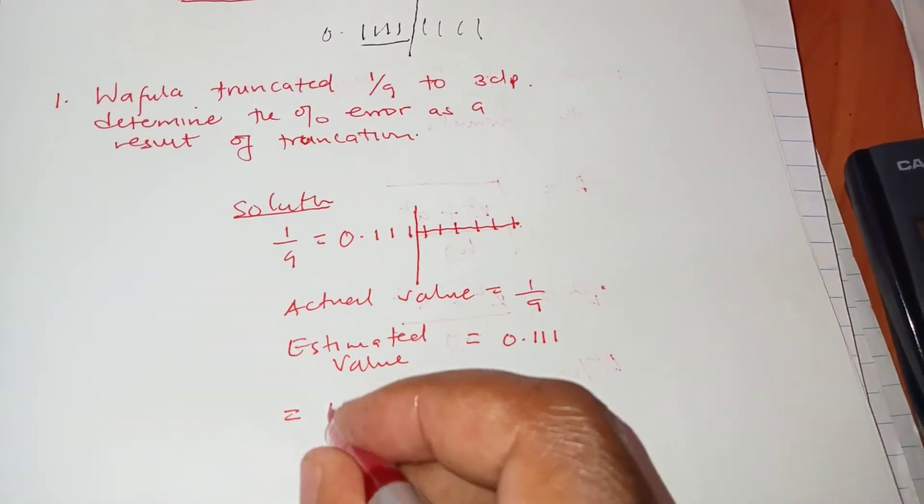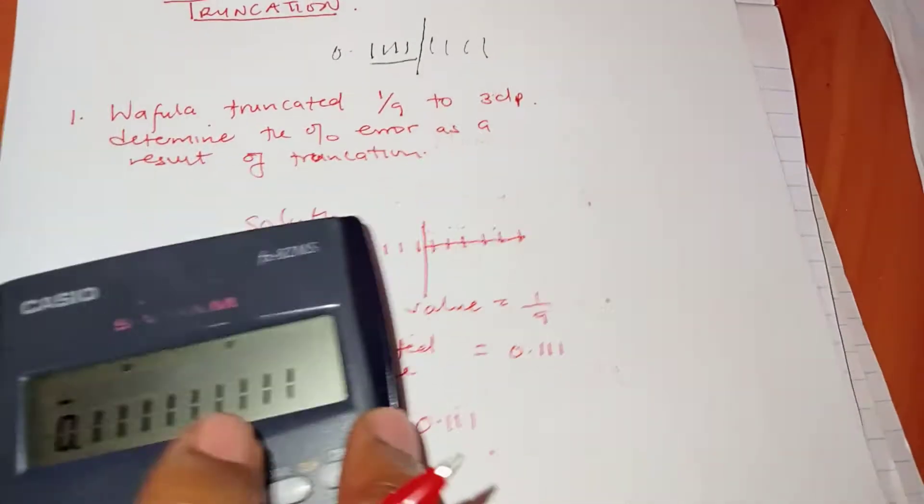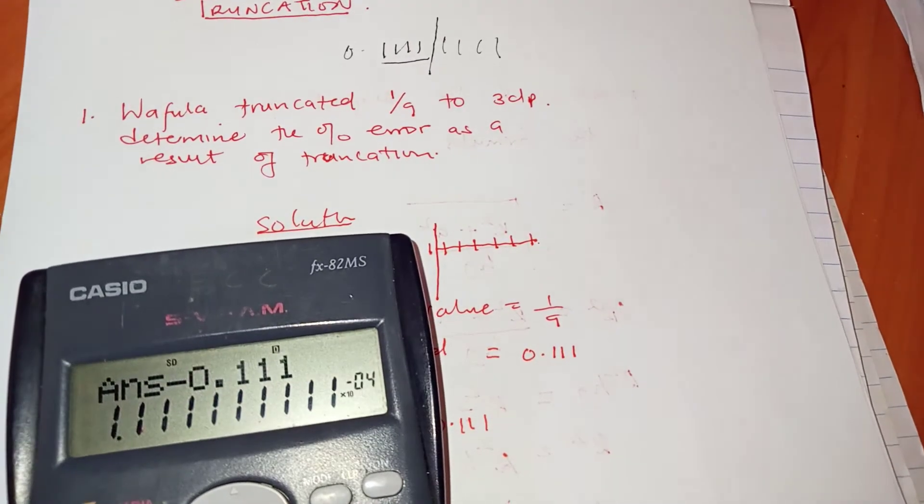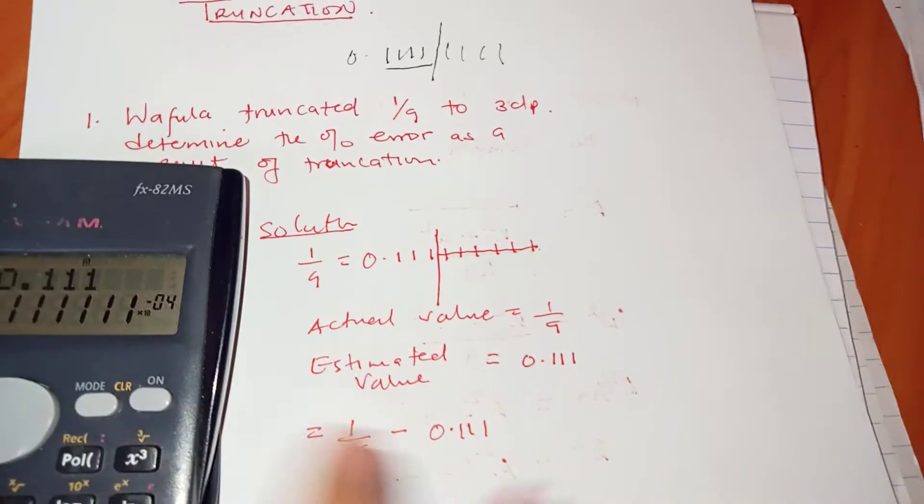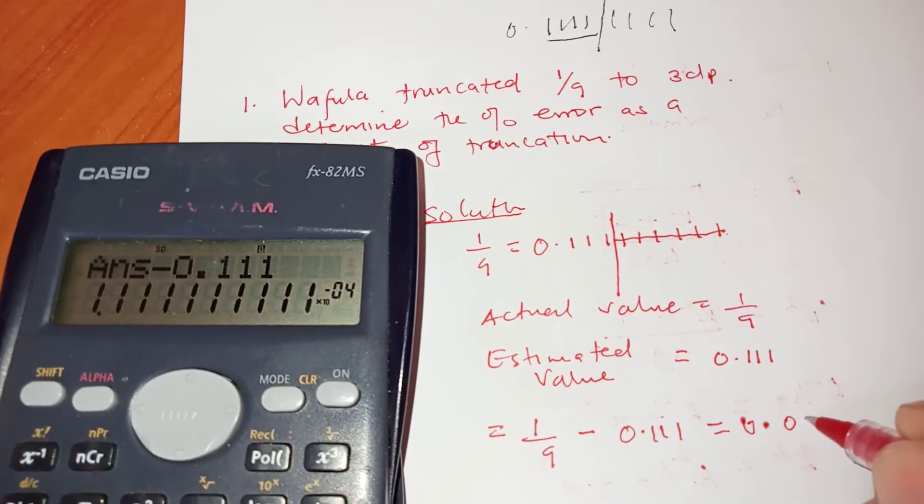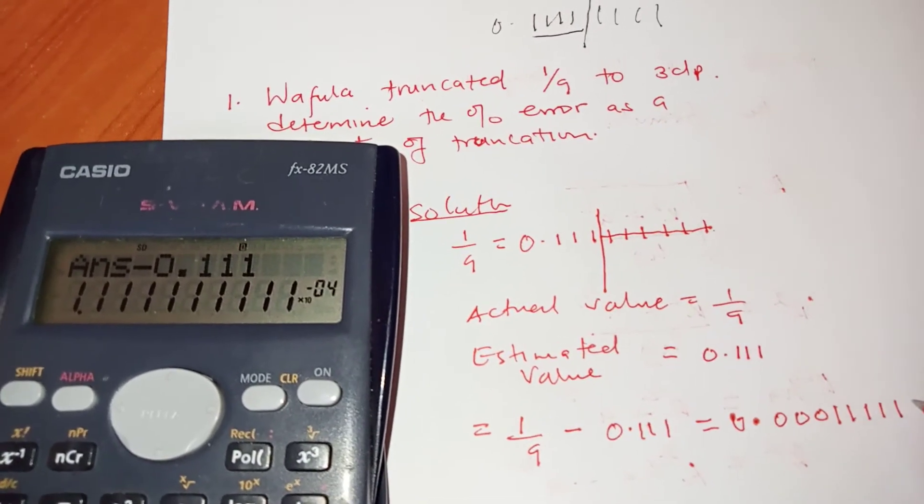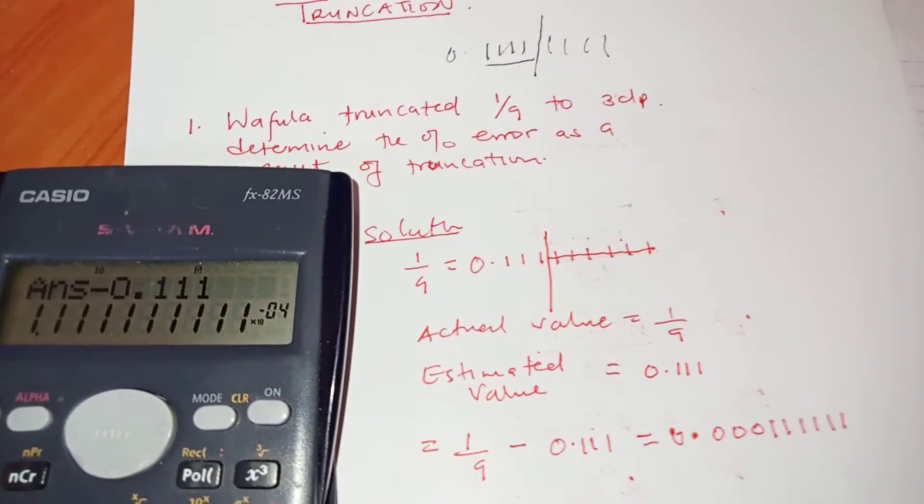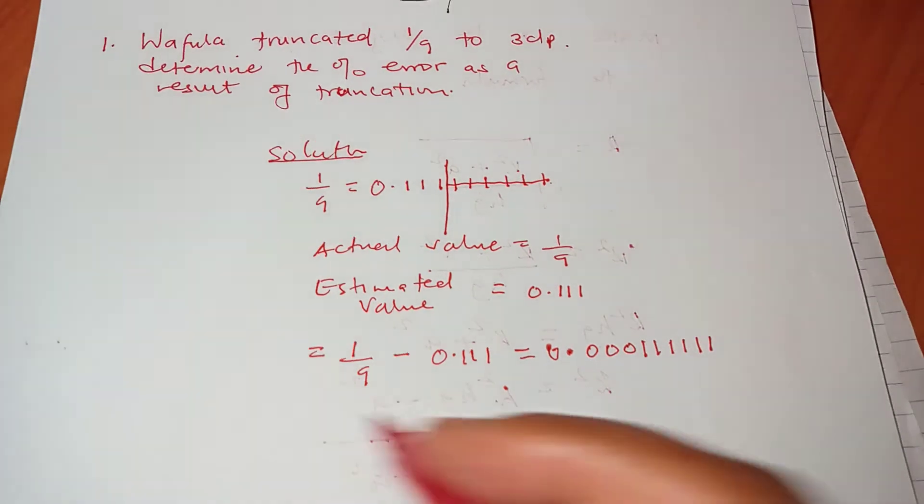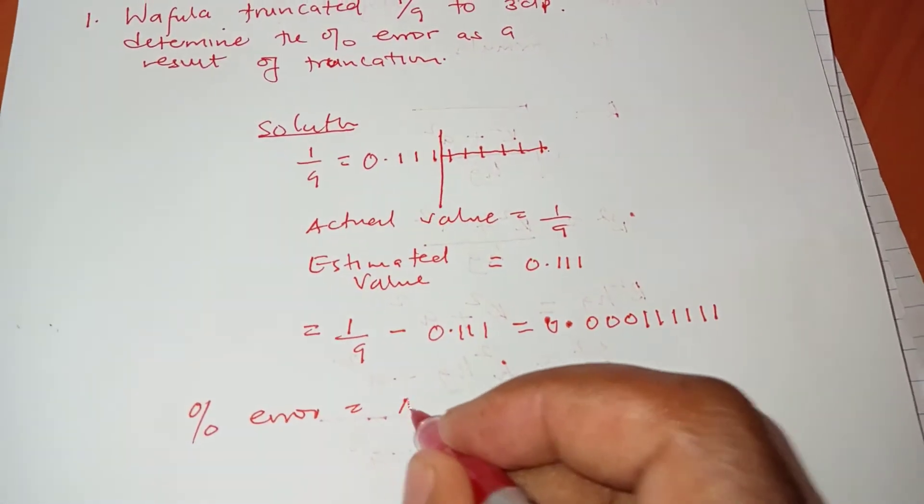That's this number correct to three decimal places. So what's the error? Error is the difference, so you have 1 over 9 minus 0.111. So we are going to have 1 divided by 9 minus 0.111, so we get 0.00011111 and so on.